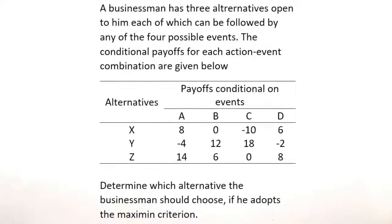We have a question which reads: a businessman has three alternatives open to him, of which can be followed by any of the four possible events. The alternatives here are x, y, and z while the events possible are a, b, c, and d. The conditional payoffs for each action-event combination are given. Determine which alternative the businessman should choose if he adopts the maximin criterion.